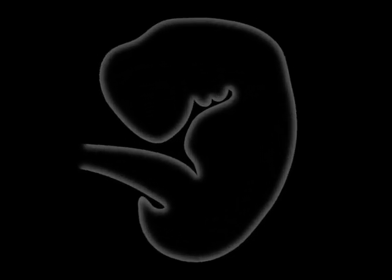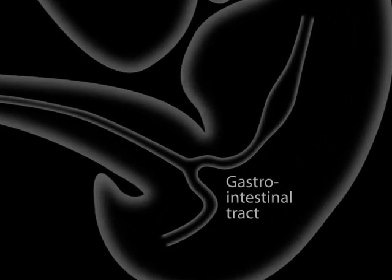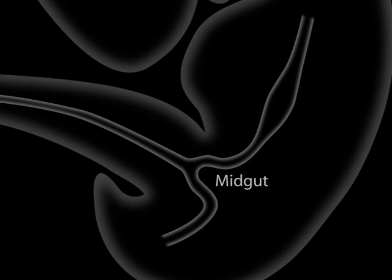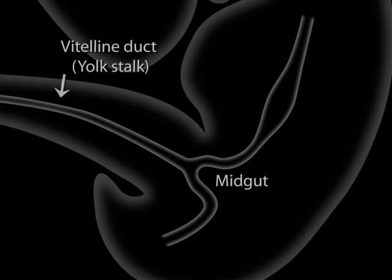Rotation of the midgut happens during the second month of intrauterine life. This is the gastrointestinal tract, consisting of the foregut, the hindgut, and the midgut. The midgut is continuous with the vitelline duct, or yolk stalk, which later becomes obliterated.